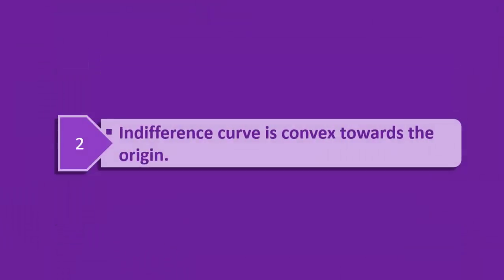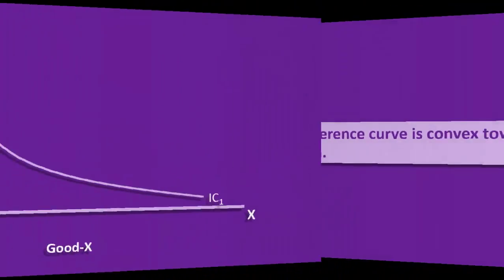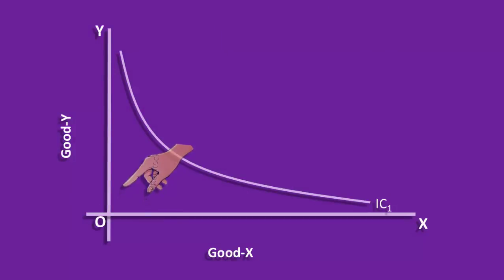In this case, Indifference Curve is convex towards the origin. This is because marginal rate of substitution of X for Y is diminishing. The first property says the fall in the stock of good Y and rise in the stock of good X make the Indifference Curve to slope downwards. This is not enough to prove the unchanging nature of total utility. We need more evidence to support this. It is here the marginal rate of substitution of X for Y comes to our rescue. Numerically, we had discussed it under the head slope of the Indifference Curve.